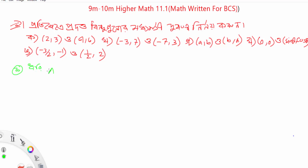A equals (2, 3) and B equals (4, 6). So we have to find the distance. Here, a is equal to A.